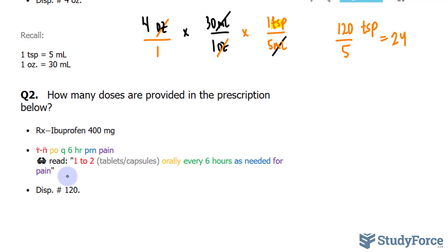So if you're given an option, one to two or one to three or whatever, you want to pick the larger of the two numbers. So two. So you need two tablets for every one dose.